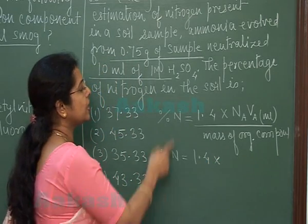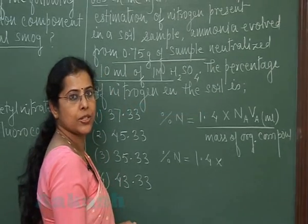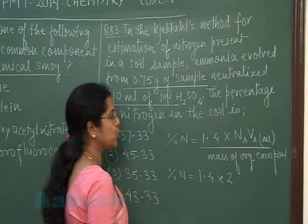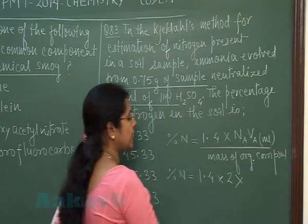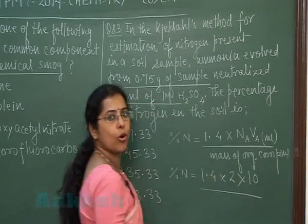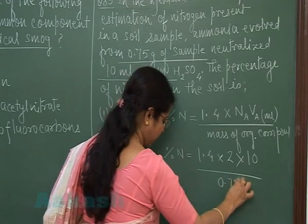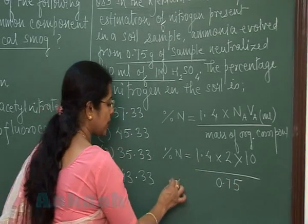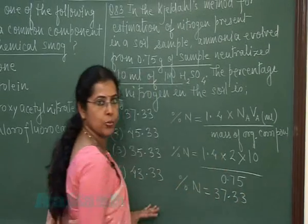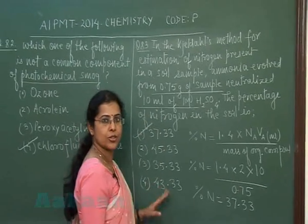The acid taken is sulfuric acid, which is a diprotic acid. Its molarity is given as 1M, so its normality will be 2. The volume of acid is given as 10 mL, and the mass of organic compound used for estimation is 0.75 g. Solving this, the percentage of nitrogen comes out to 37.33%. So the first option is the correct answer.